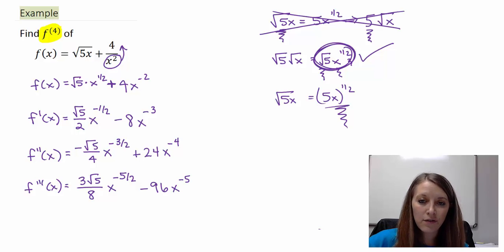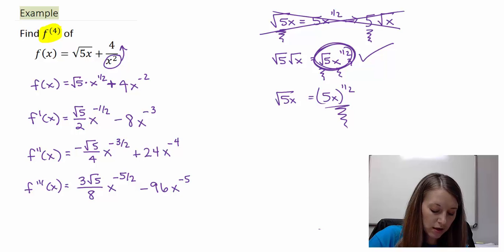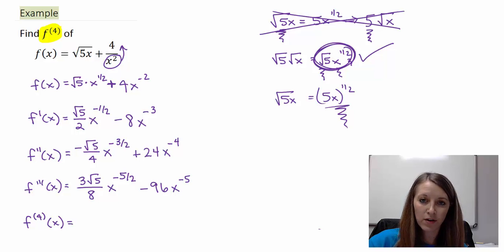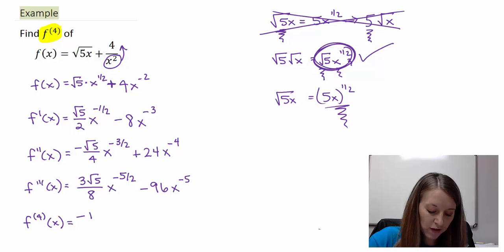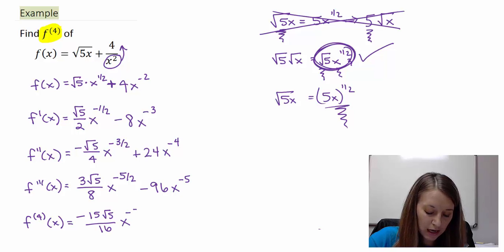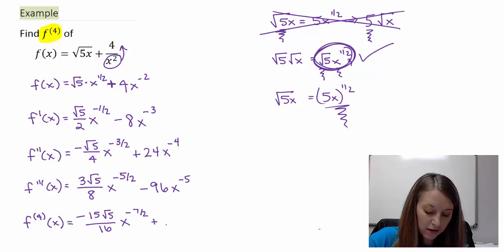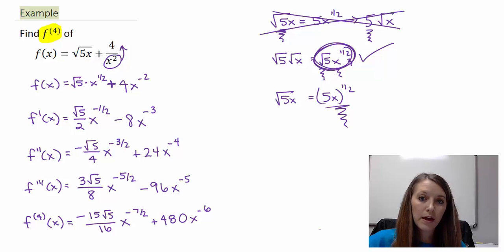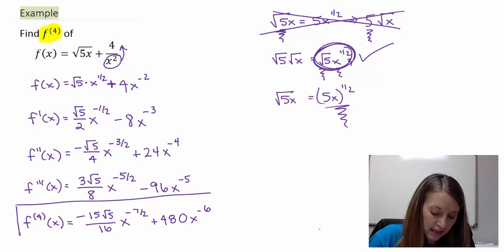I can't simplify, so I move on to the last derivative, f to the 4th. Multiply straight across again: negative 3 times 5 gives 15, square root of 5 over 8 times 2 gives 16, so negative 15 root 5 over 16, times x to the negative seven-halves. For the second term: negative 96 times negative 5 gives positive 480, and x to the negative 6th power. Since it just asked for the 4th derivative, this is a perfectly fine answer.